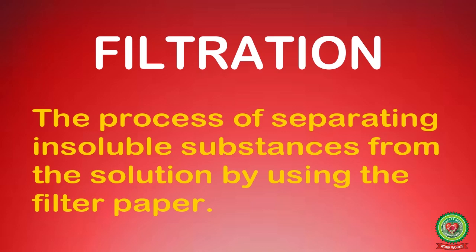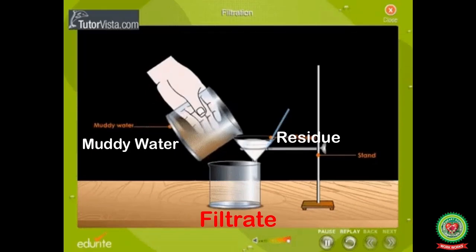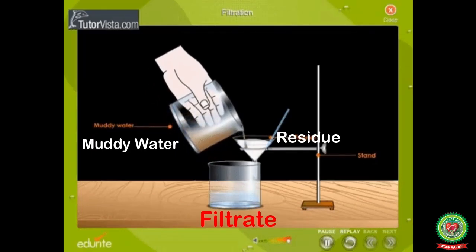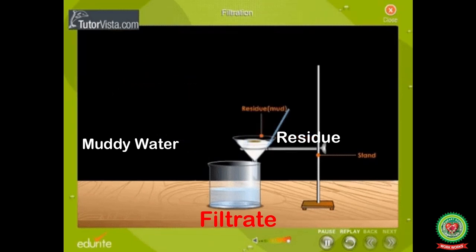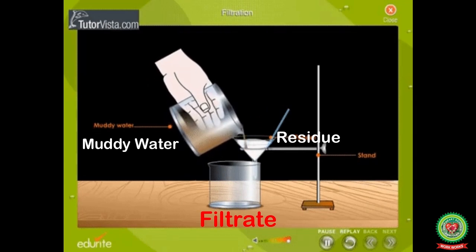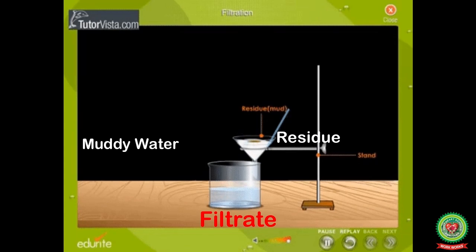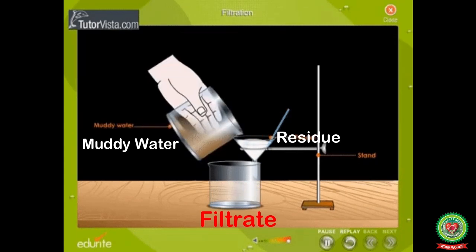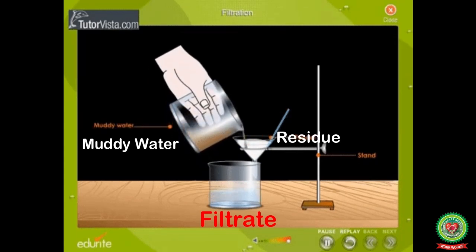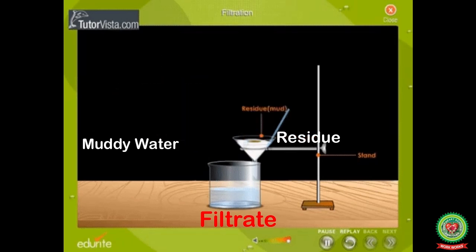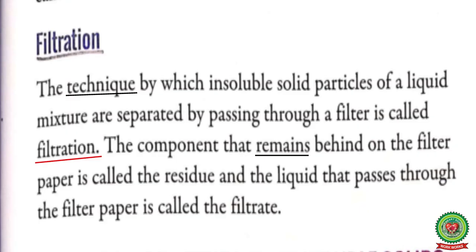The definition of filtration is: the process of separating insoluble substances from the solution by using filter paper. In filtration, the liquid having insoluble substances is separated by passing through filter paper. The component that remains behind on the filter paper is called residue, and the liquid that passes through is called the filtrate.